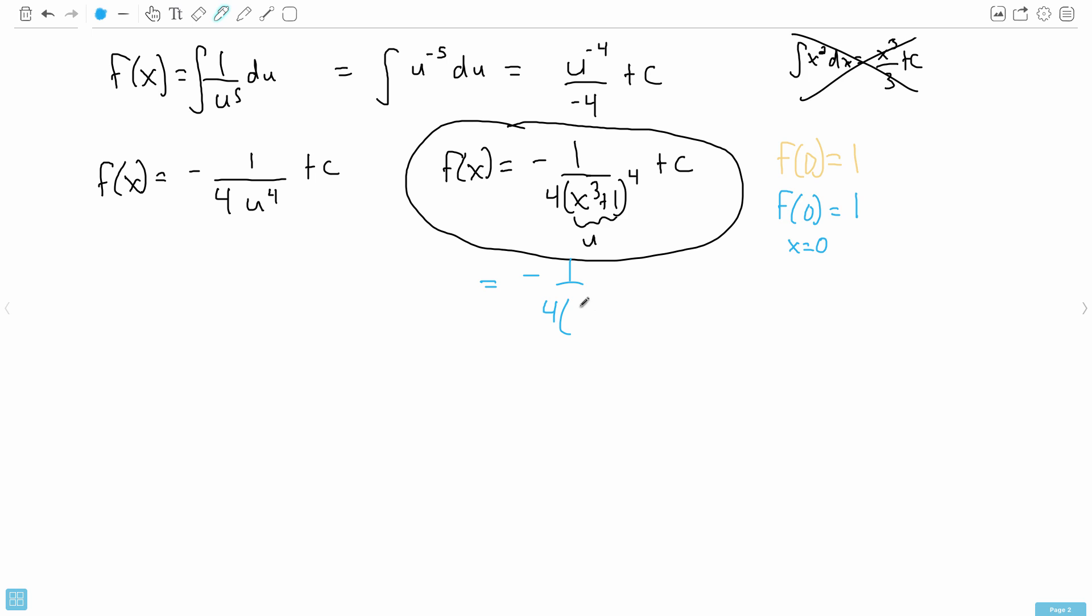All that to the power of 4. All that plus c. I know that f of x is going to be 1. So I put in a 1 here. Therefore, I can keep going. The 1 equals, let's see, negative 1 over 4 times, and 0 cubed is 0, plus 1 is just 1. 1 to the power of 4 is just 1.